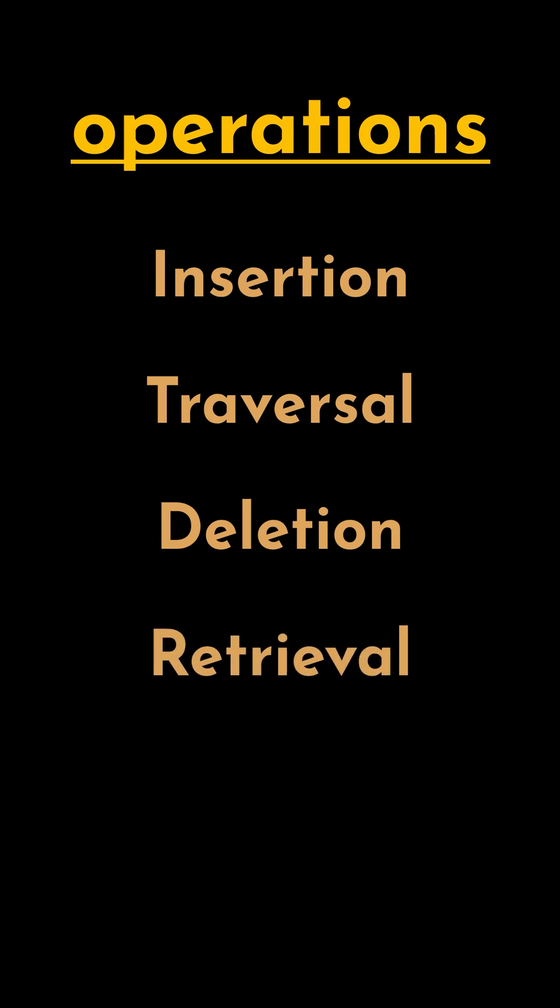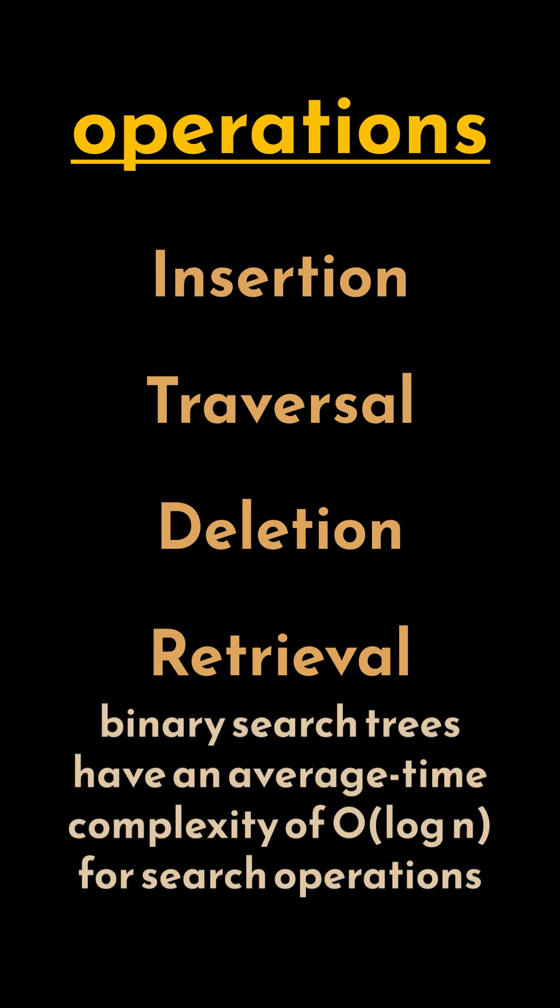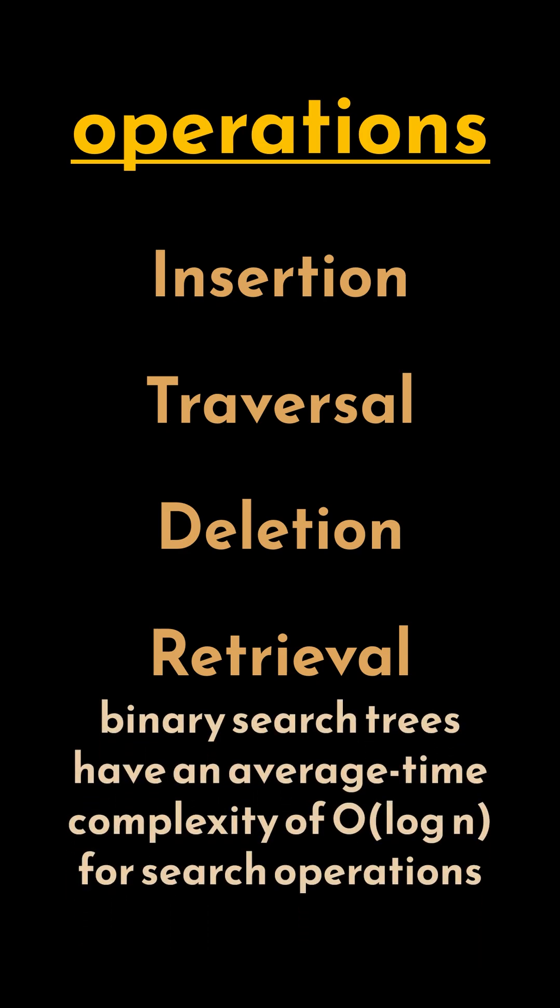Searching helps us find a node with a given value, which is especially efficient in balanced trees. Binary search trees can have an average time complexity of O(log n) for search operations, making them efficient for many use cases.